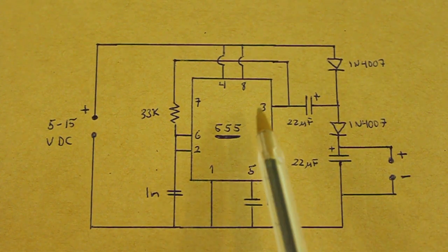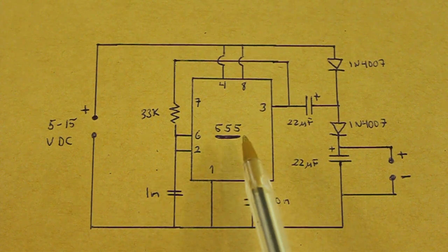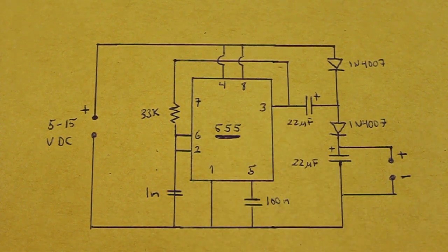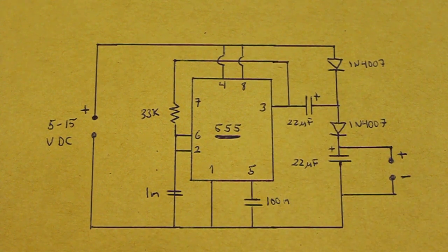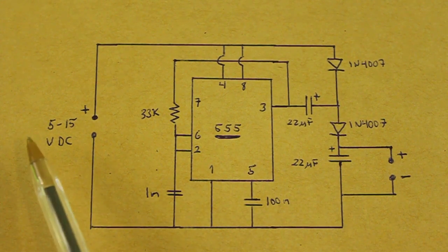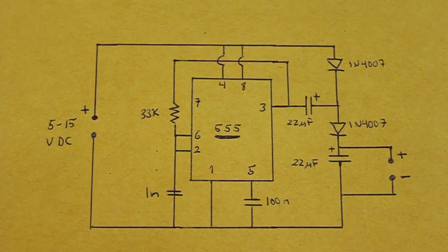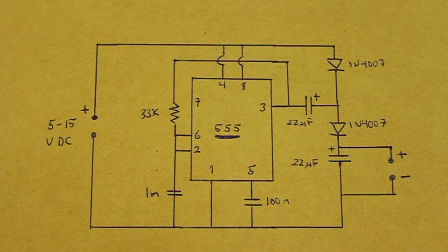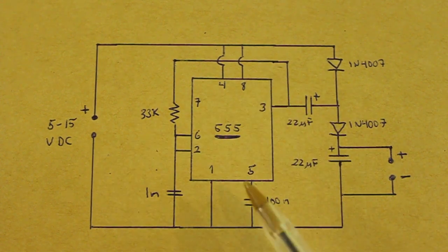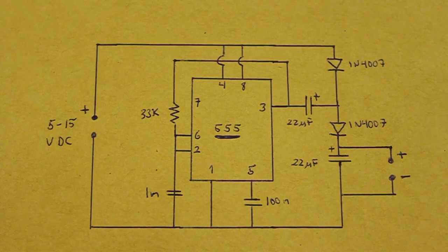As we can see, the output pin number three of the 555 is fed to the Villard cascade. This circuit can work with 5 to 15 volts DC, and in the output we will have almost double that value minus some losses in the circuit, approximately half a volt.